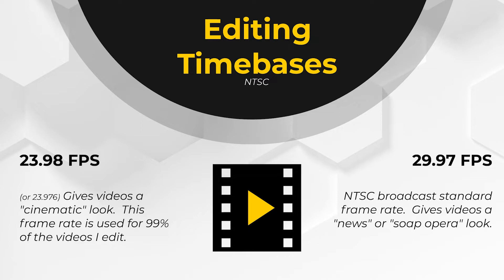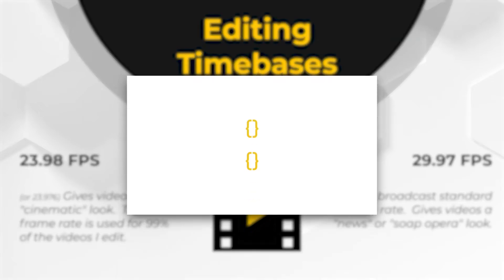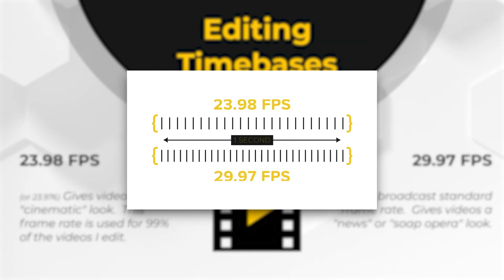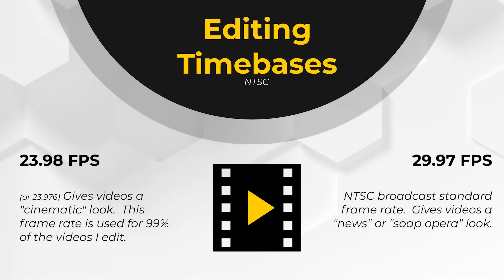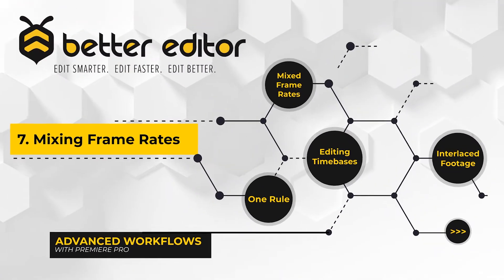23.98 is my preferred frame rate because of the cinematic quality — it's essentially the industry standard around Hollywood. Because of the additional frames that 29.97 has, it gives video more of a lifelike quality, like something you'd see on the news or a soap opera. Most broadcast deliveries for television shows, commercials, and movies are still required to be in 29.97.